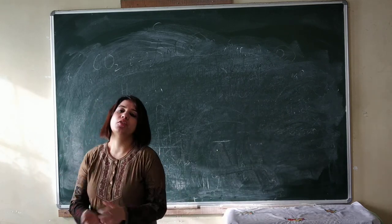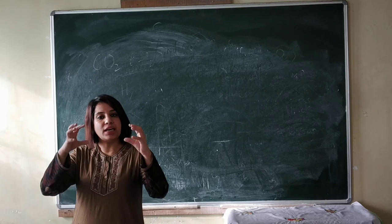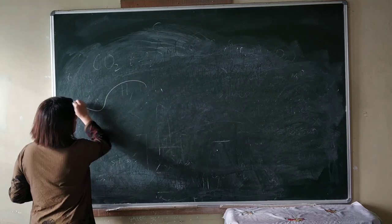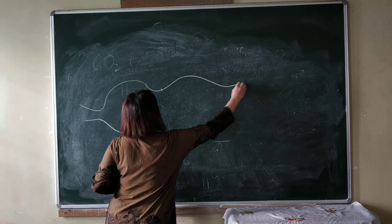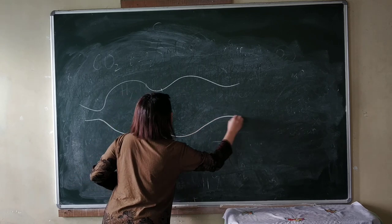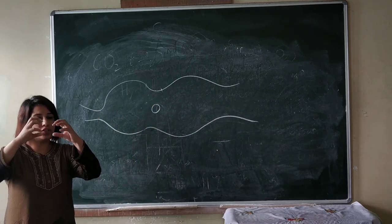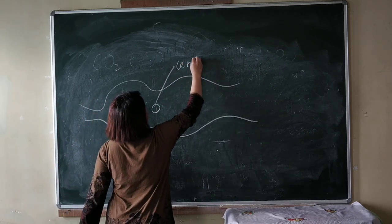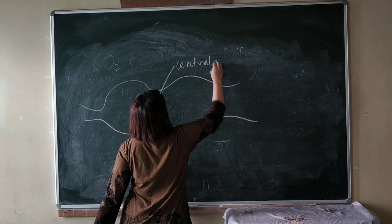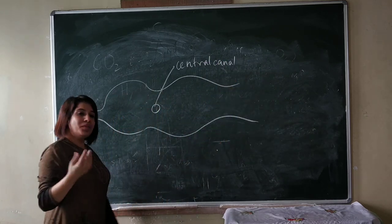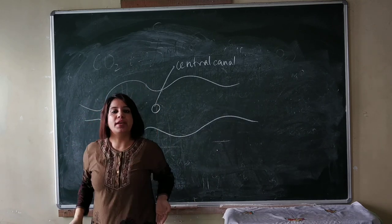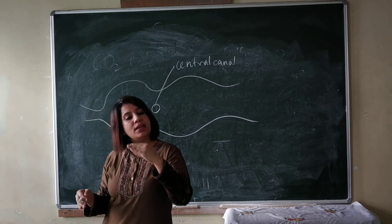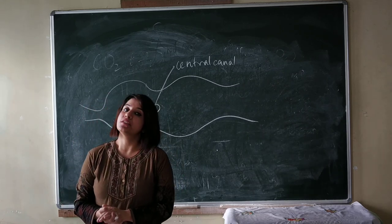If we take a cross section of the spinal cord, we see that it consists of two halves joined together and there is a canal in the centre. These two parts join together and form a small canal in the centre which is known as the central canal. Now, in the brain, the outer part consists of the gray matter which consists of pericaryons, and the inner layer is the white matter which consists of axons.